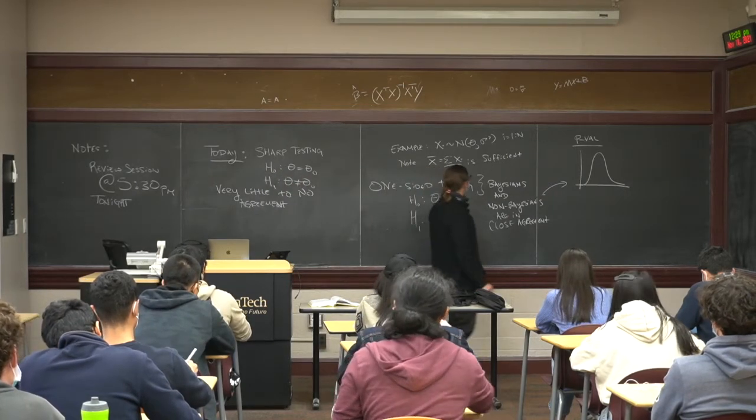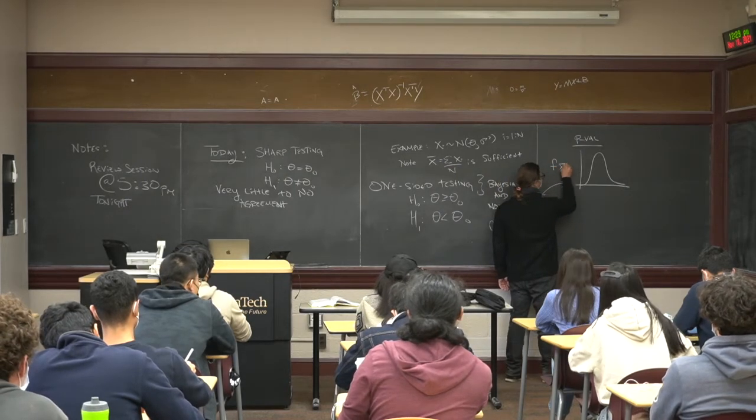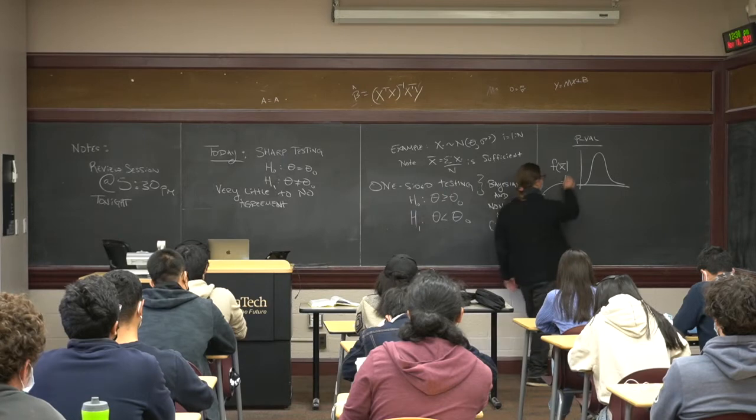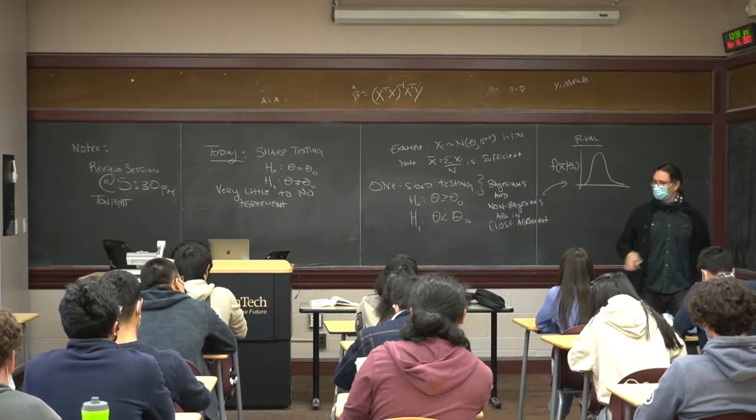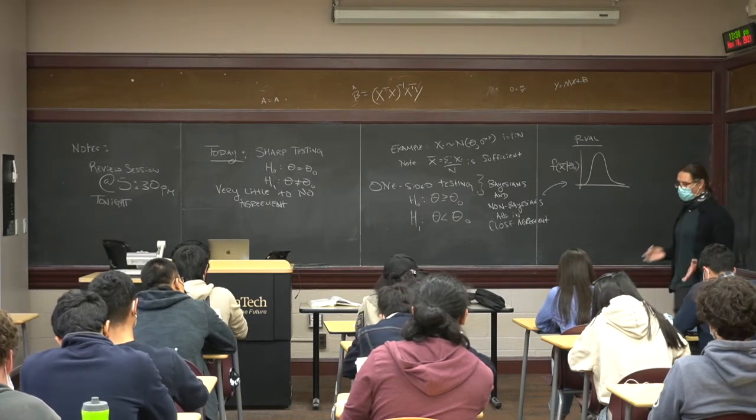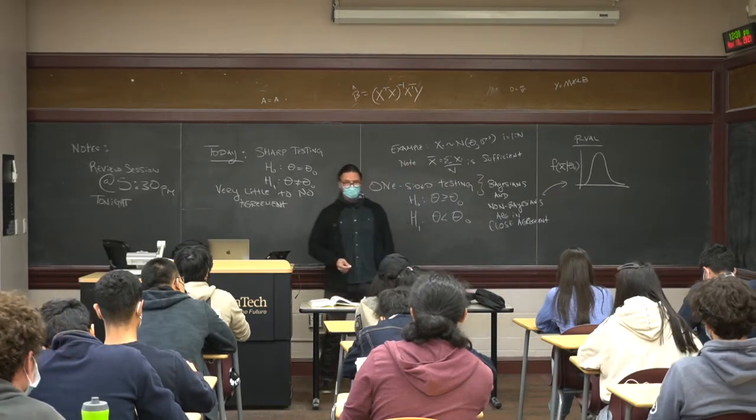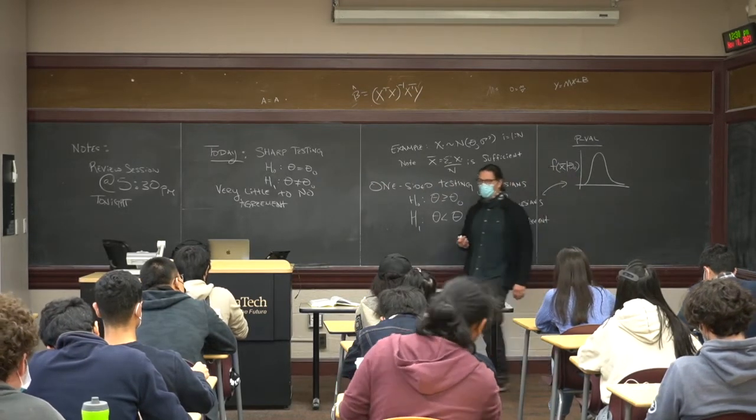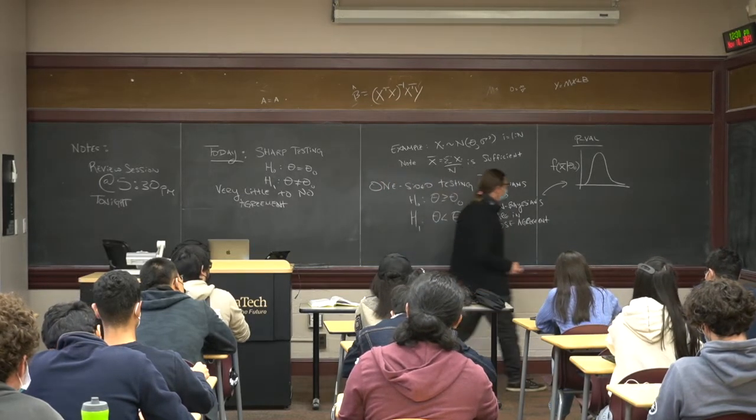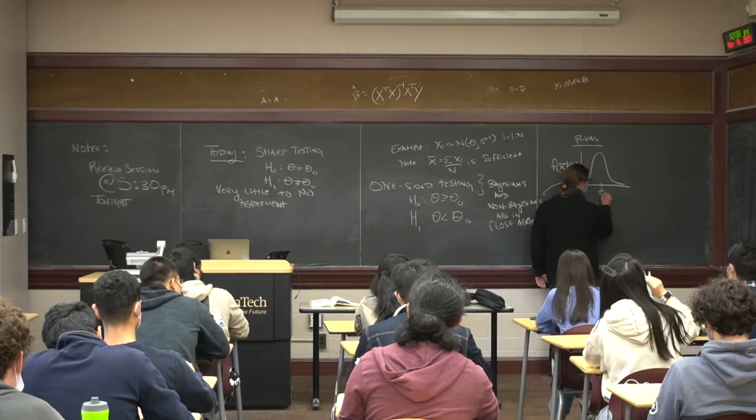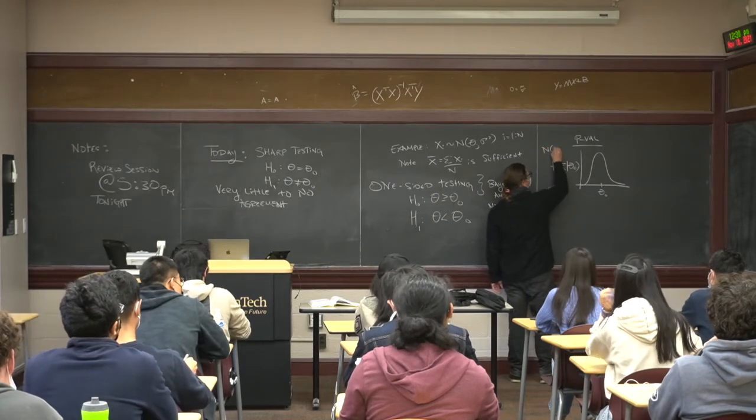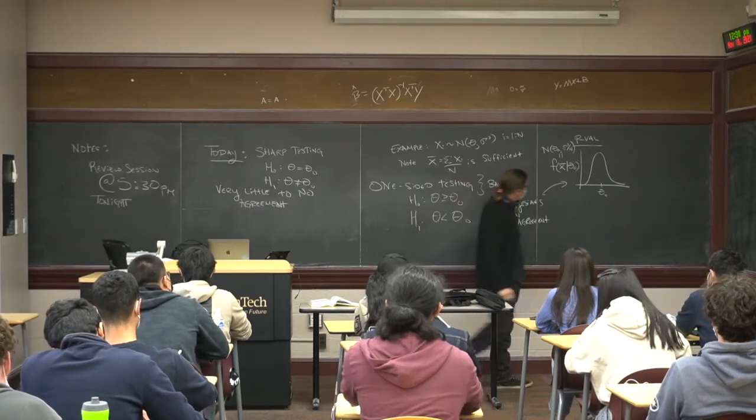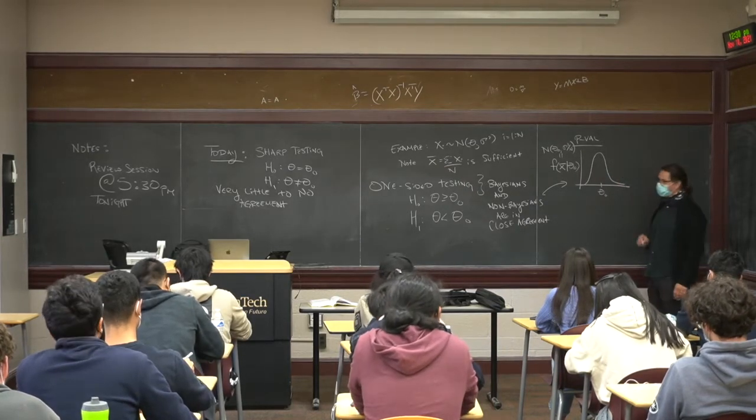A p-value thing is they're going to form the null distribution on x-bar. And I'm going to plug in this thing at the boundary right here. This distribution is going to be centered at theta naught. This thing is a normal distribution centered at theta naught with variance sigma squared over n. That's the null distribution.